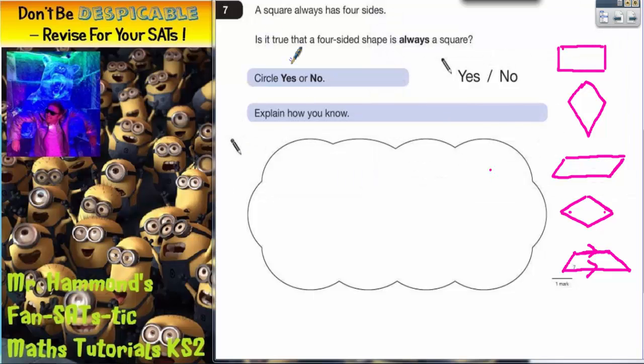Question 7. A square always has four sides. Is it true that a four-sided shape is always a square? Circle yes or no.